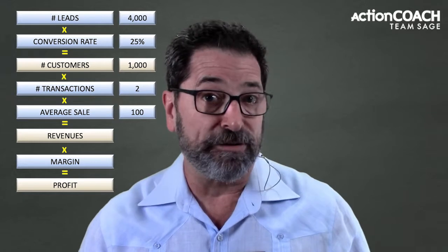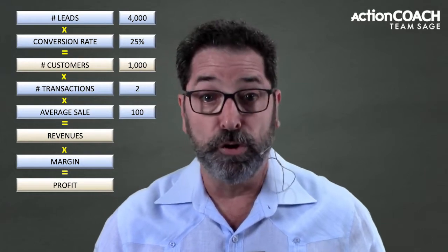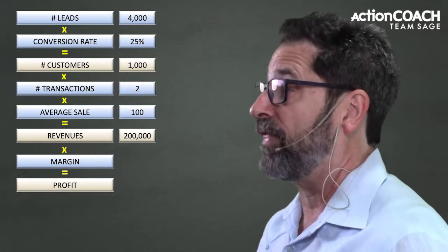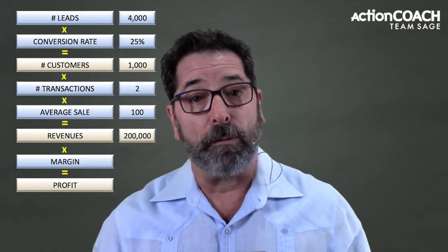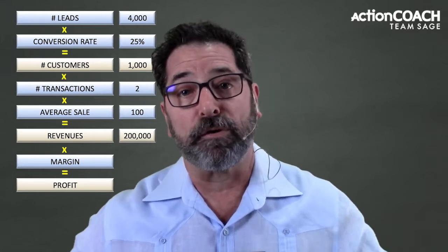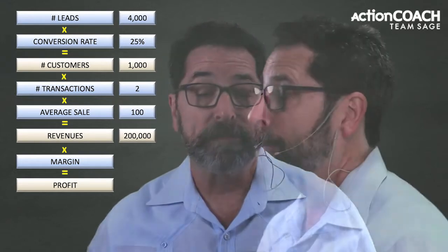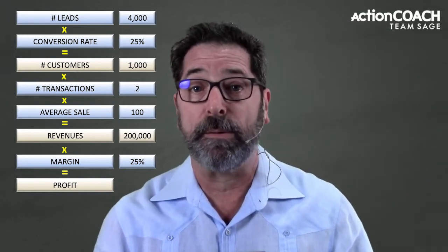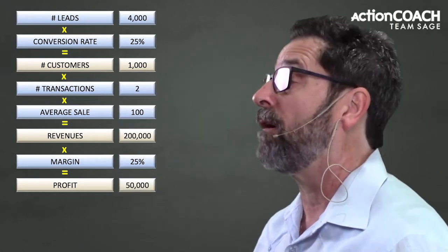So if I have 1,000 customers spending on average $100, and they do so twice, my revenues will be $200,000. Now the next number we need to understand is our margins — the percentage that we keep of the revenue we brought in. With a 25% margin on $200k, we would keep $50k as profit.